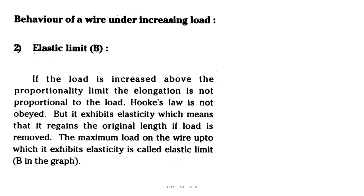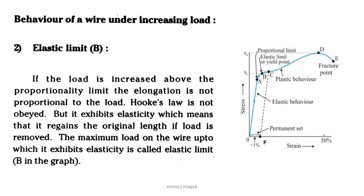If we increase the load and continue, applying stress causes a certain strain or elongation, and we get additional elongation. There is a certain limit to this. The proportionality limit is this limit point; the elastic limit point is where stress applied to the wire still allows the wire to return to its original length. If any weight or stress is applied, the material still behaves elastically within this region.